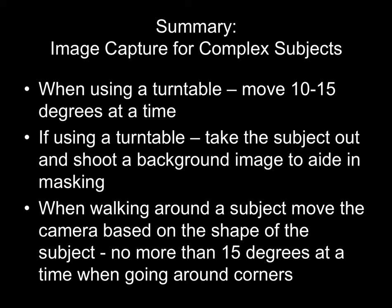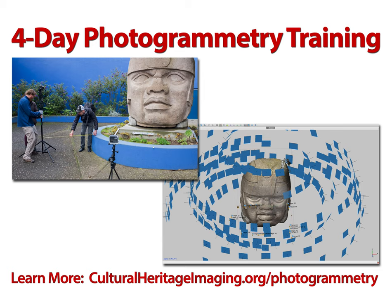In summary: if you're using a turntable, move 10 to 15 degrees at a time and take a background image without the subject for each camera position — so if you have three circuits, you need a background image for each circuit. If you're walking around a subject, move the camera based on the shape of the subject: use two-thirds overlap on flat areas, translating one-third of the horizontal field of view, and no more than 15 degrees at a time when going around corners. Thanks for listening. You can also come take photogrammetry training with us in our studio — check it out.